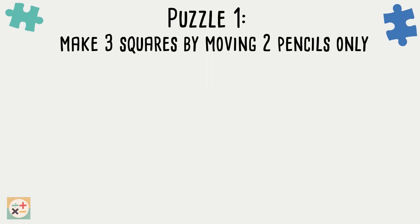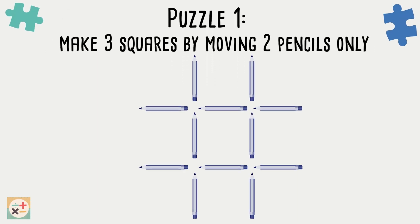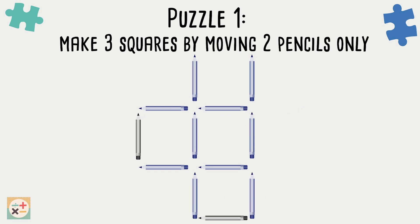Move only two pencils to make three squares. The solution to this puzzle is self-explanatory and there is more than one way to solve this puzzle. See if you can spot any more.